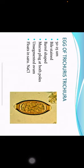Eggs of Trichuris trichiura are 50 by 25 micrometers in dimension. They are bile stained. They are barrel shaped with a mucus plug at both poles. Inside there is an unsegmented ovum.